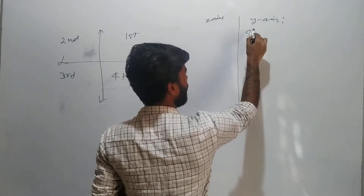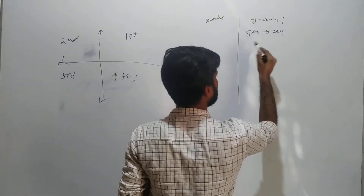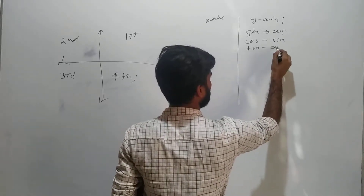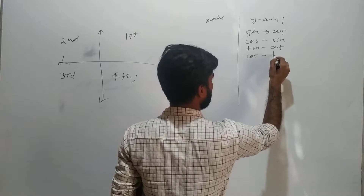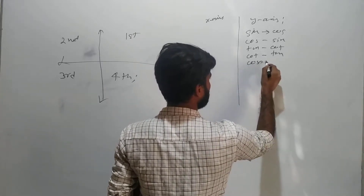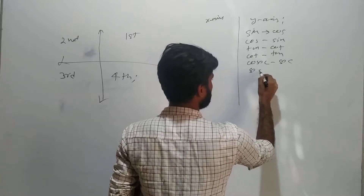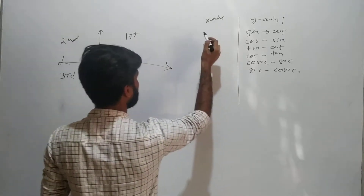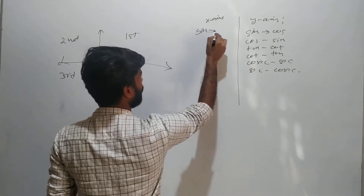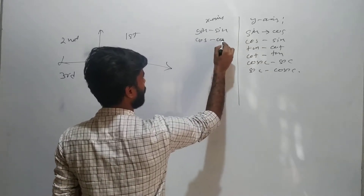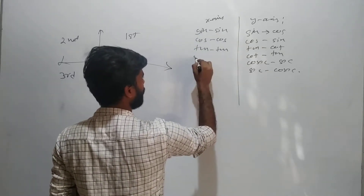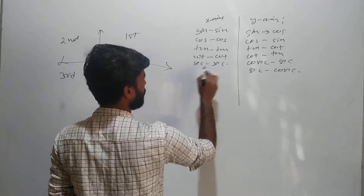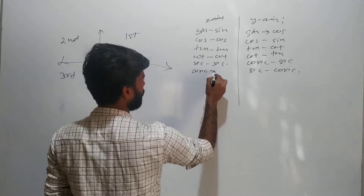For the y-axis: sine will change into cos, cos will change into sine, tan will change into cot, cot will change into tan, cos will change into sec, and sec will change into cos. For the x-axis: sine will remain sine, cos will remain cos, tan will remain tan, cot will remain cot, sec will remain sec, and cosec will remain cosec.